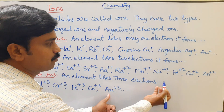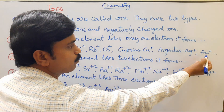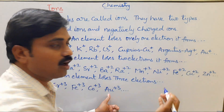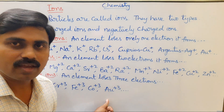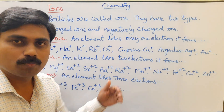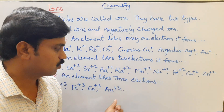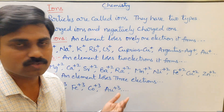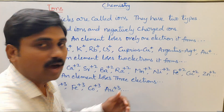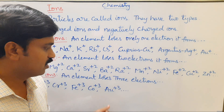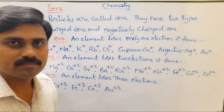Previously we discussed Au⁺ — this is the aurous ion, having less positive charge. Au³⁺ is more positive and is therefore called the auric ion.